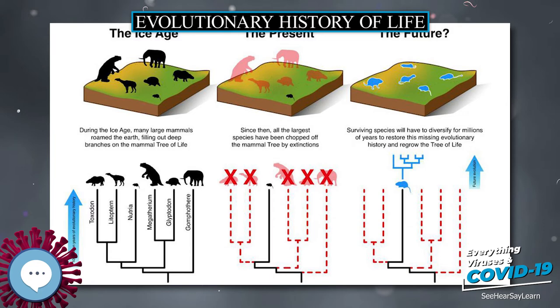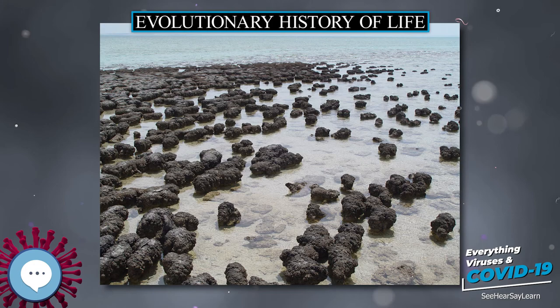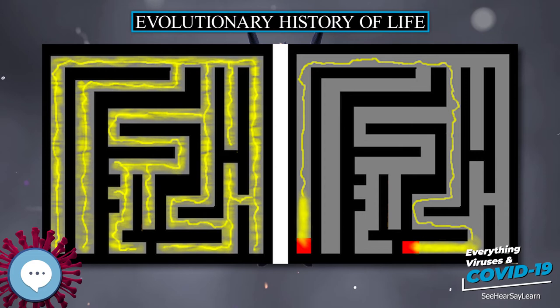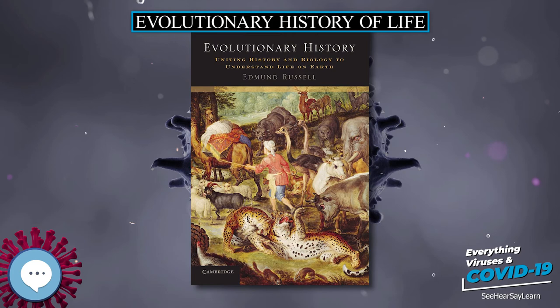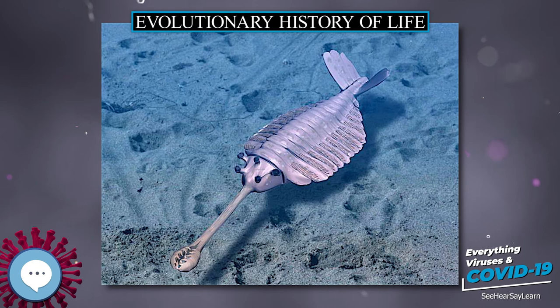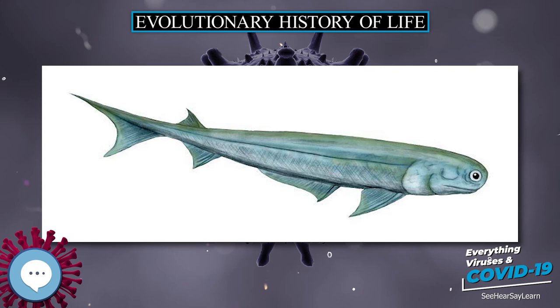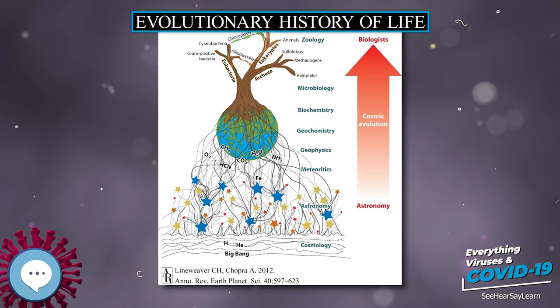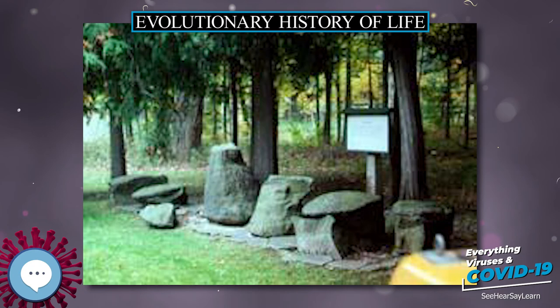Animals are multicellular eukaryotes, and are distinguished from plants, algae, and fungi by lacking cell walls. All animals except sponges have bodies differentiated into separate tissues, including muscles, which move parts of the animal by contracting, and nerve tissue, which transmits and processes signals. In November 2019, researchers reported the discovery of Caviesphera, a multicellular organism found in 609-million-year-old rocks, that is not easily defined as an animal or non-animal, which may be related to one of the earliest instances of animal evolution. Fossil studies of Caviesphera have suggested that animal-like embryonic development arose much earlier than the oldest clearly defined animal fossils.